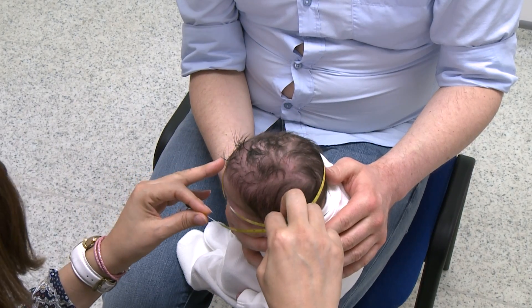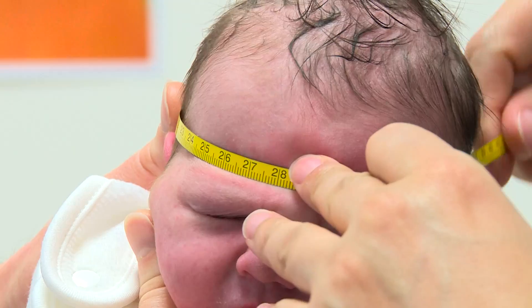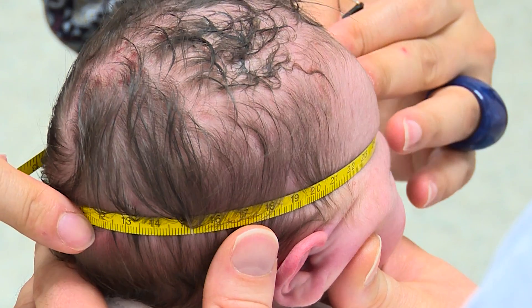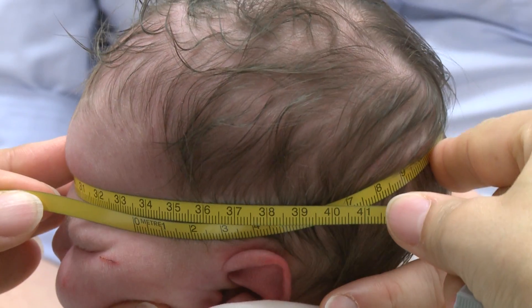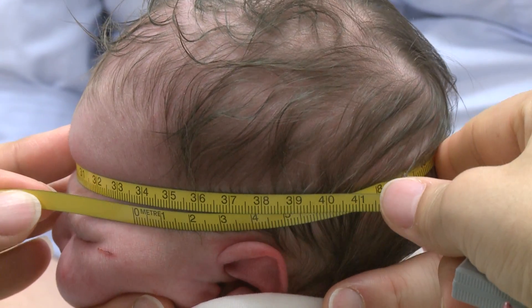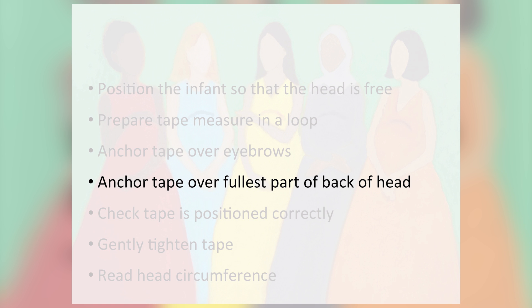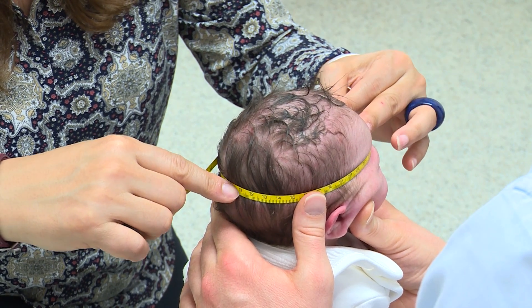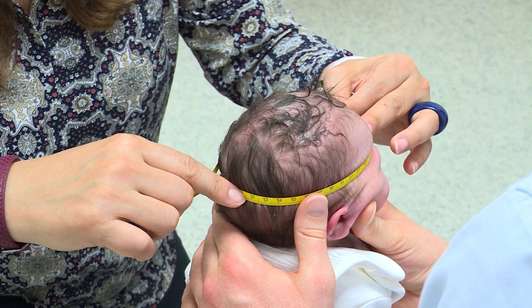Crouching at eye level with the baby, position the tape around the baby's head, with it lying just above the baby's brow line and on the fullest part of the skull at the back of the head. The zero should be somewhere by the side of the head. The assistant holding the baby needs to ensure that the tape is lying flat, not lying over the ear on their side, is level and not slanted.